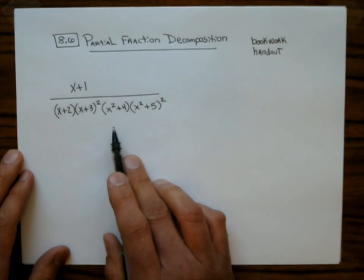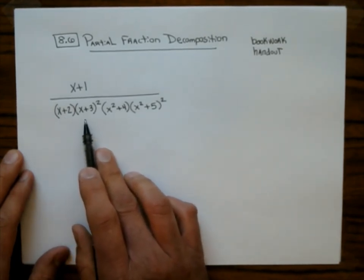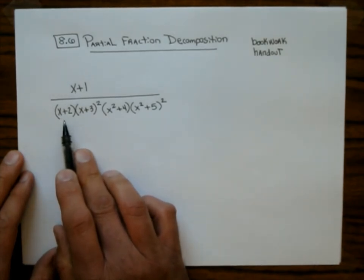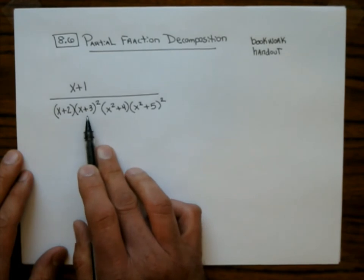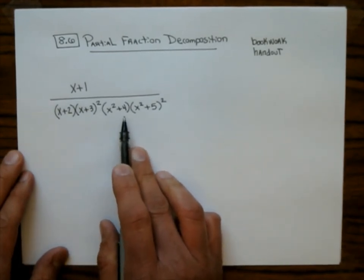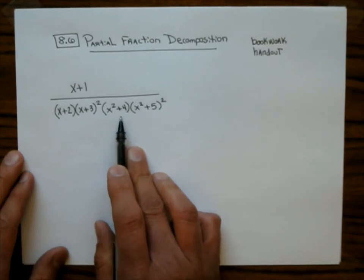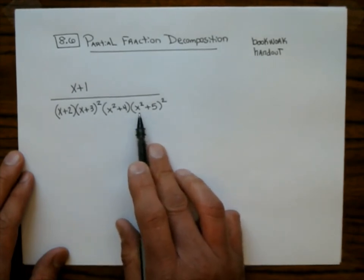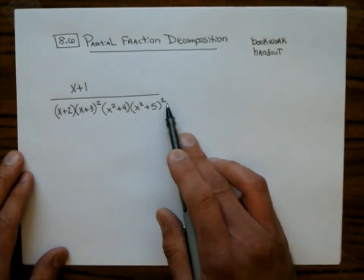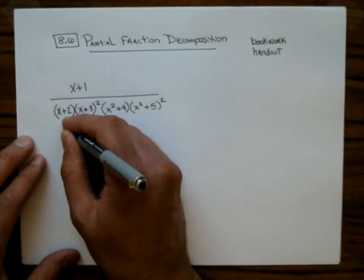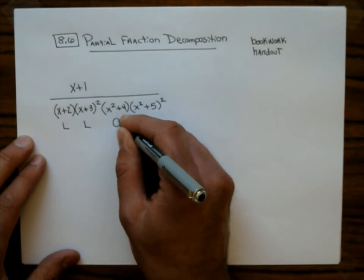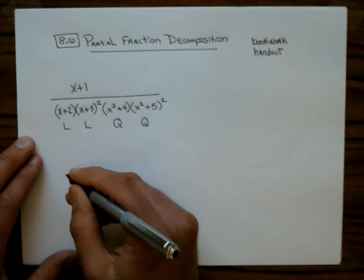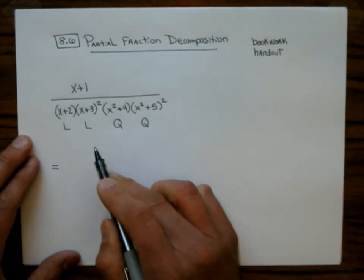You've got this rational function and you've got factors on the bottom. Our factors can be linear like this one. Here's a linear factor that's to a power. This right here is a quadratic factor. We learned earlier in this class we can factor this over the complex numbers, but we're not going to, so that's a quadratic factor. Here's a quadratic factor to a power of 2. So this is linear, linear, quadratic, quadratic. You are going to break this up into the sum of smaller-looking fractions.